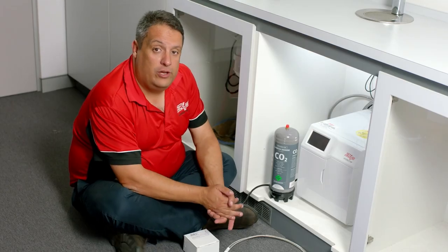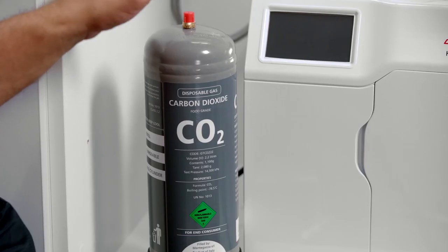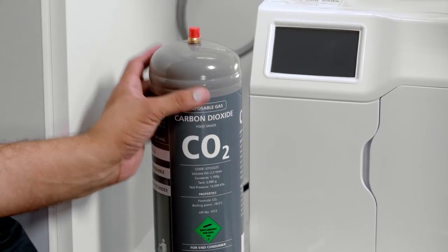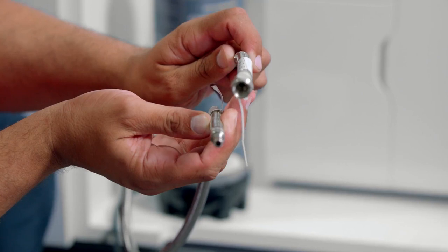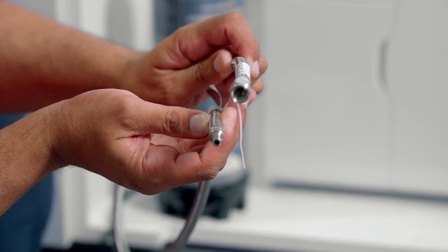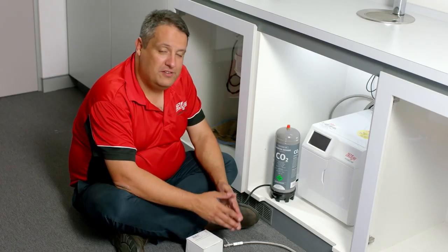Because this is a sparkling water unit, you will also receive a CO2 bottle, regulator and CO2 hose. This should all be assembled before installation in the cupboard.